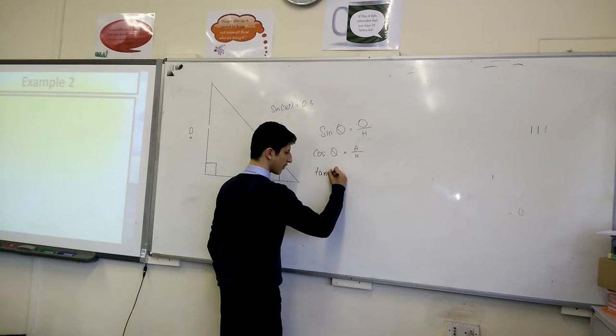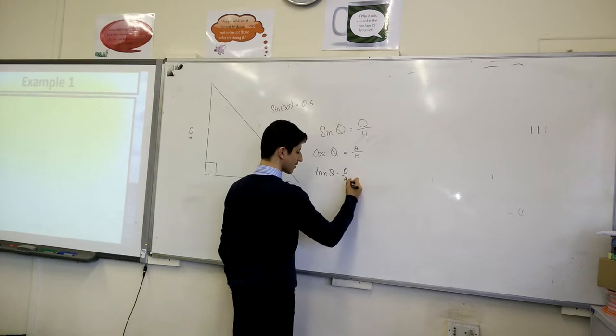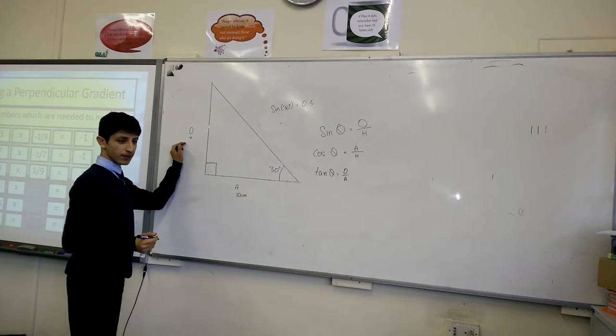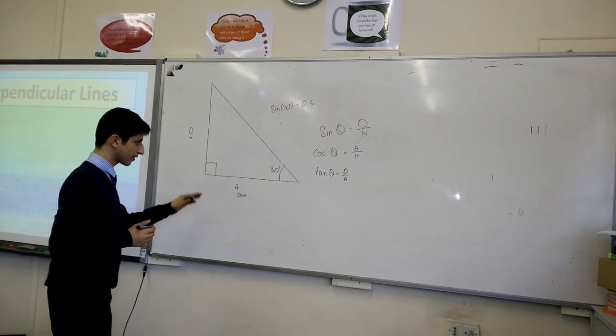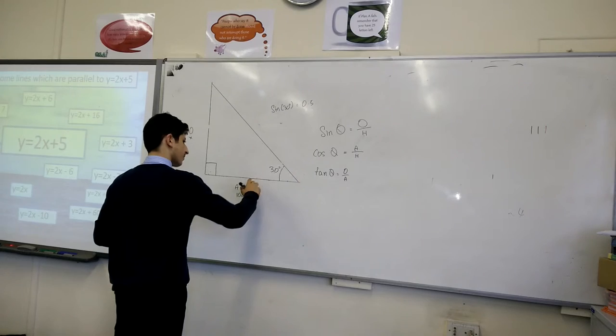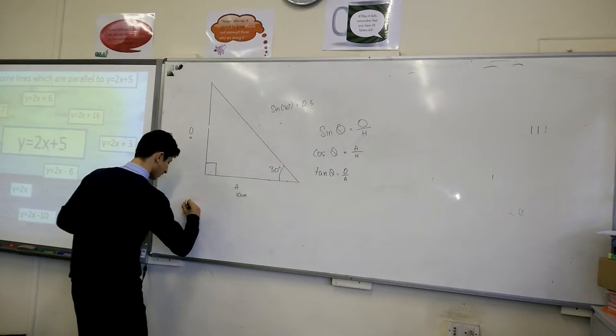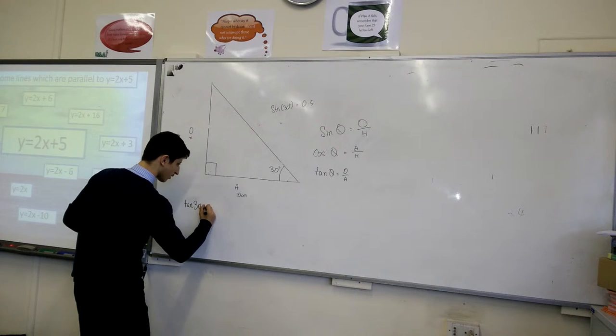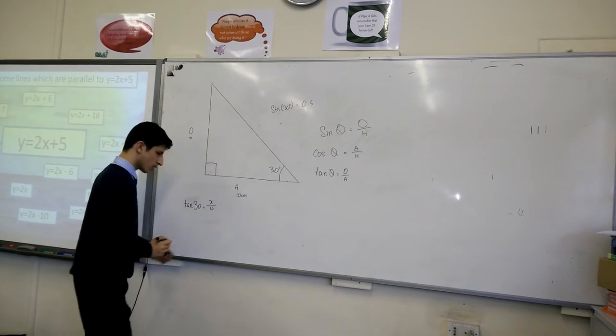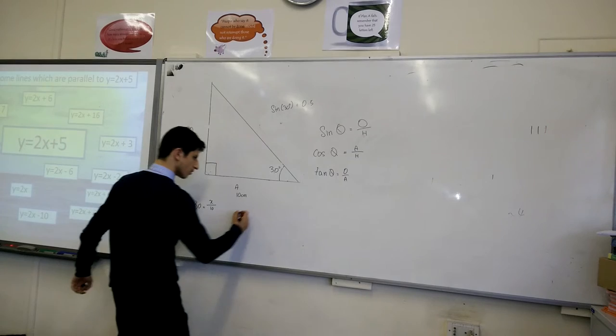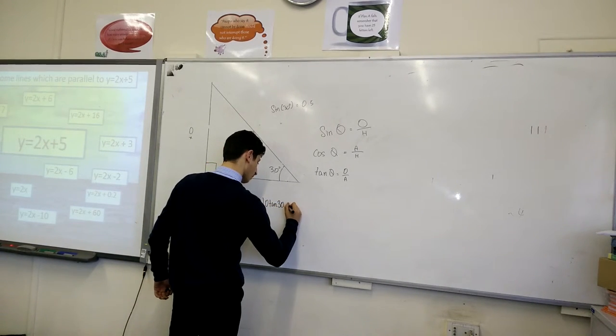The tan theta is equal to opposite over adjacent. Whether you get given the opposite, or you get given the adjacent and you're defining the opposite, then you have the adjacent to be 10 centimeters in this case. Similar method. You have the angle here, you substitute it as theta. Tan 30 equals X over 10. Well, you can multiply this 10. 10 tan 30 equals X.